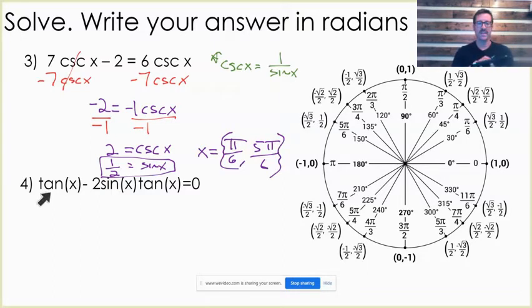In our last problem here, we have that tan x minus 2 sine x tan x equals 0. And here's where we've got to be a little bit careful. This one doesn't look directly like these others. In fact, we have two different trig functions in here. We have sine x and we have tan x.